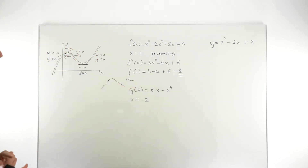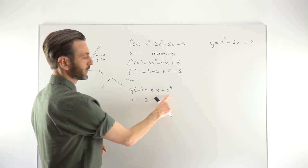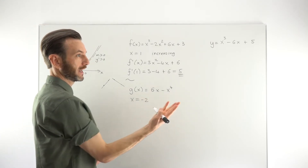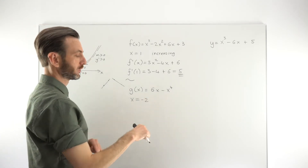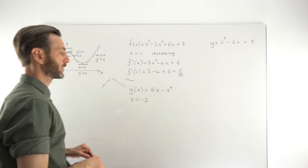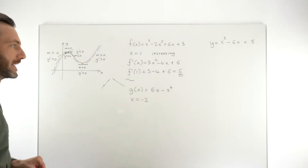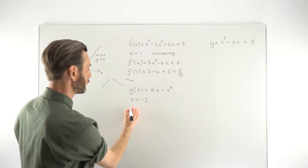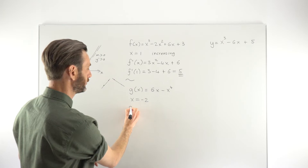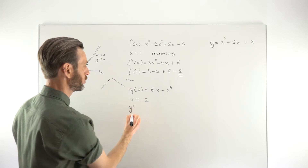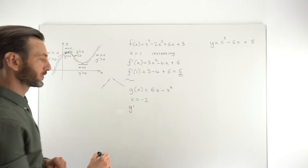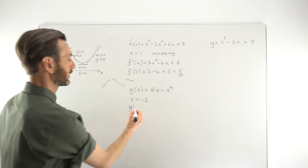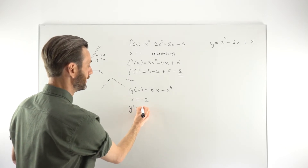We want to determine whether this function is increasing, decreasing, or potentially stationary at the point where x = −2. Not really thinking too much in geometric terms here — even though we have the geometric interpretation, we're going to go ahead and answer this algebraically.